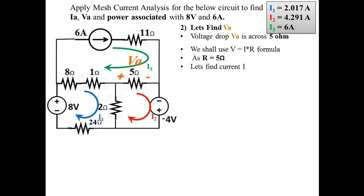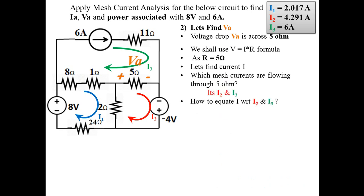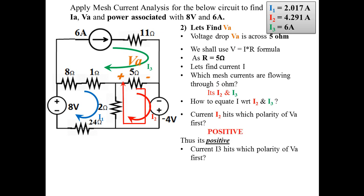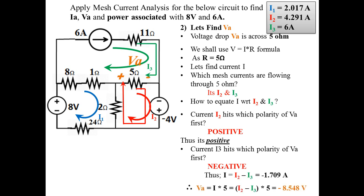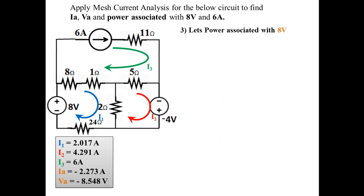To find VA: VA is the voltage across 5Ω, using V = I×R. The mesh currents flowing through 5Ω are I2 and I3. Current I2 hits the positive polarity of VA first, so it is positive; I3 hits the negative polarity first, so it is negative. Thus the current through 5Ω is (I2 - I3), giving VA = (I2 - I3)×5 = -8.548 volts.